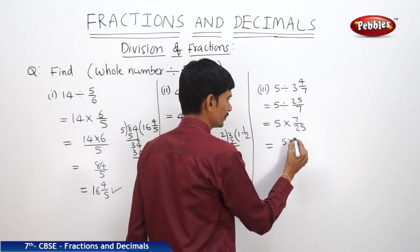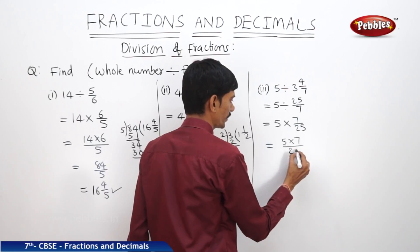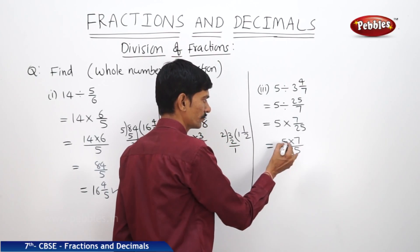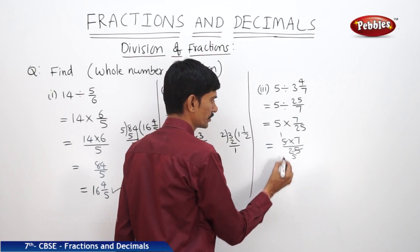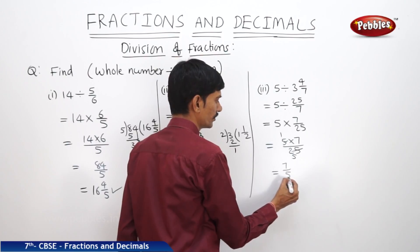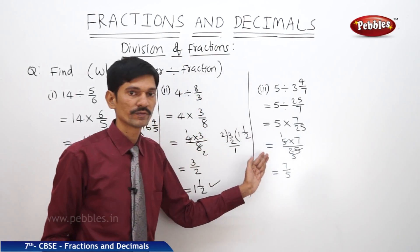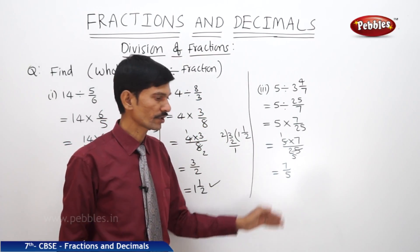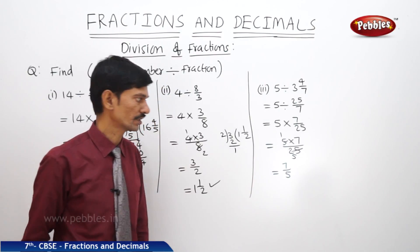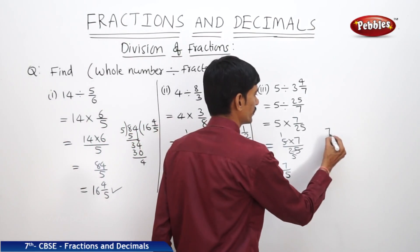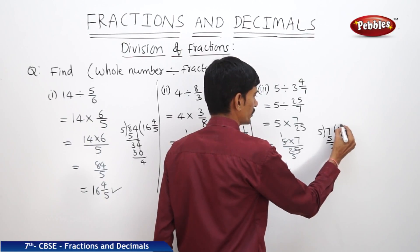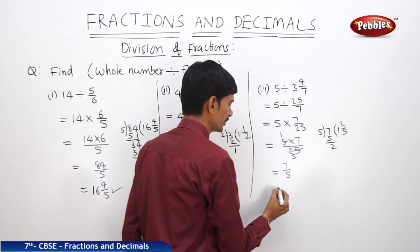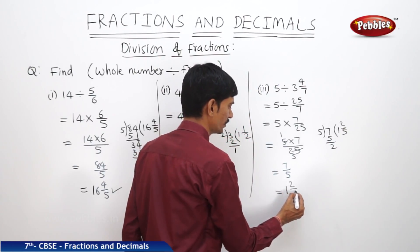We get 5 × 7/25. We can cancel 5 and 25, giving 7/5. This is also an improper fraction. Dividing 7 by 5 gives a quotient of 1 with remainder 2, so we write 2/5. Therefore the result is 1²⁄₅ in mixed fraction form.